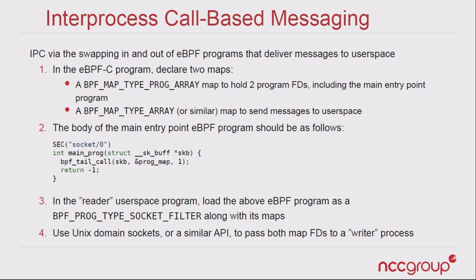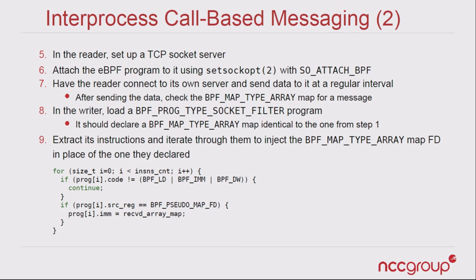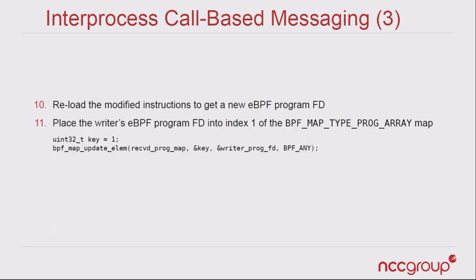What this means is we can pass maps to another process, have them dynamically fill in their own programs that take spots in the program array, and then every time an event happens — like a packet is received — it will call their code, which can send a message back to us. You need to send two map file descriptors: the program array they're going to write into, and the map it's going to write to, because eBPF programs don't have global context awareness of file descriptors. You iterate through the instructions, put in the received map file descriptor, load the program, then update the map entry.